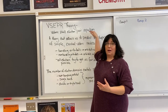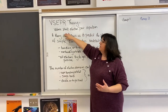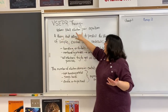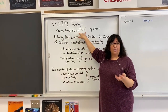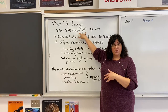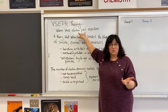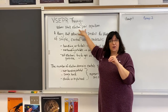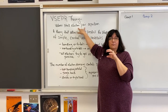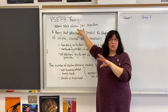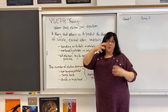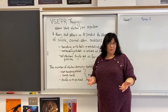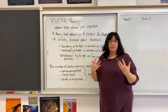Think about the parts of the word. Valence shell makes sense — those are the bonding electrons. Electron pair repulsion: electrons naturally repel because they're negatively charged. So the valence electrons are going to repel each other and get as far apart as possible, and that's what's going to help determine the shape of the molecule.